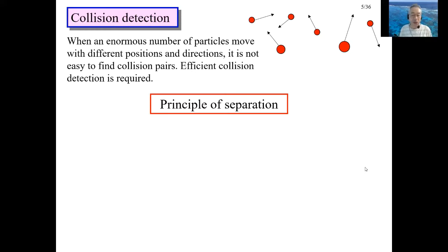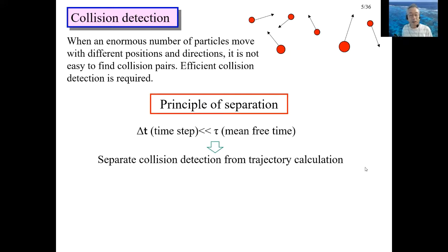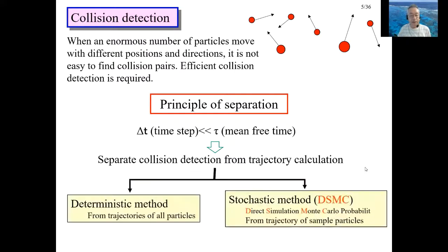An idea to solve this problem is called the principle of separation, invented in numerical analysis of molecular motion. If the time step delta t for the trajectory calculation is small enough compared with the mean free time, then the collision detection and trajectory calculation can be separated. The mean free time is the average time it takes for a particle to collide with the next particle. Using the principle of separation, collision detection can be done with a moderate time step.